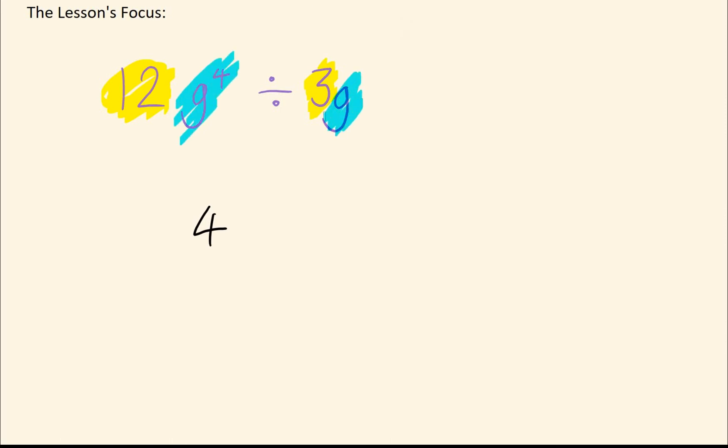We then want to divide our powers. And if we notice, we've got no power here. And as always, if there's no power, that means the power is 1. So we then subtract the powers. 4 take away 1 is 3. So we have 4g to the 3.